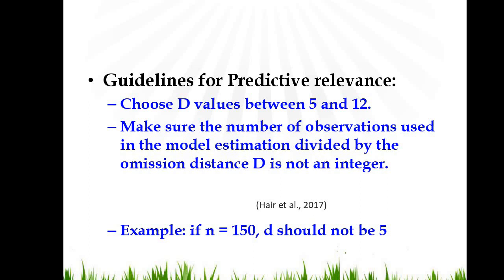For example, if number of observations are 150 and D you have picked is 5, since 5 can divide 150 so you can't do that. You have to avoid this 5 digit in this case. Same case with the 6. Since 6 can also divide 150 so we cannot use 6 also. So any digit which can divide your number of observations should be avoided. Otherwise from 5 to 12 you can pick any value.